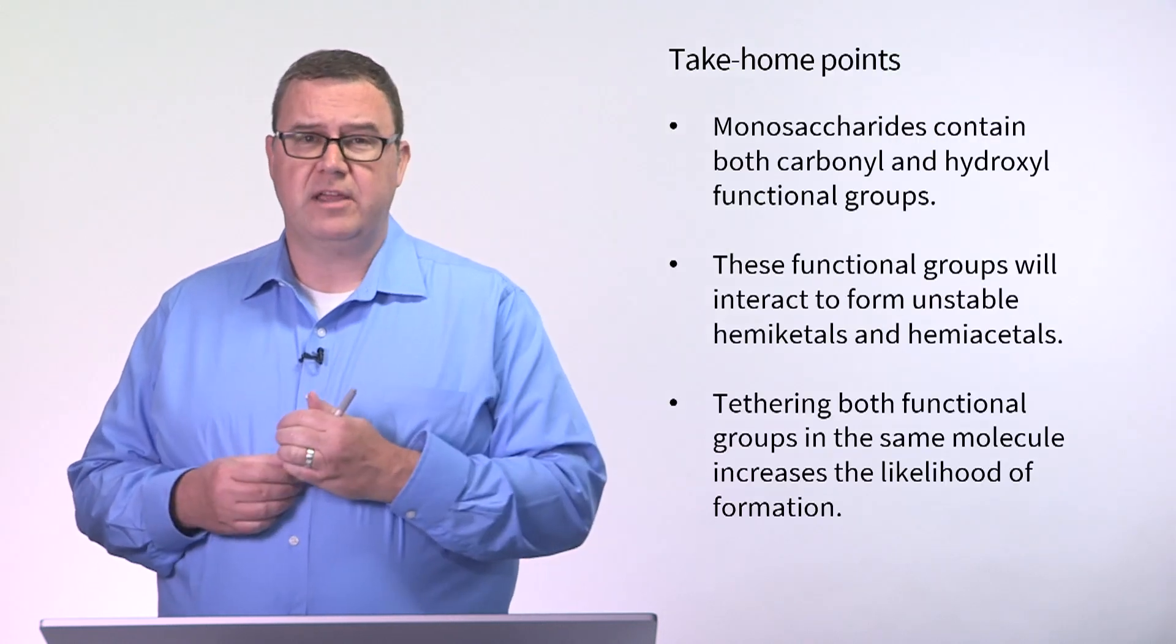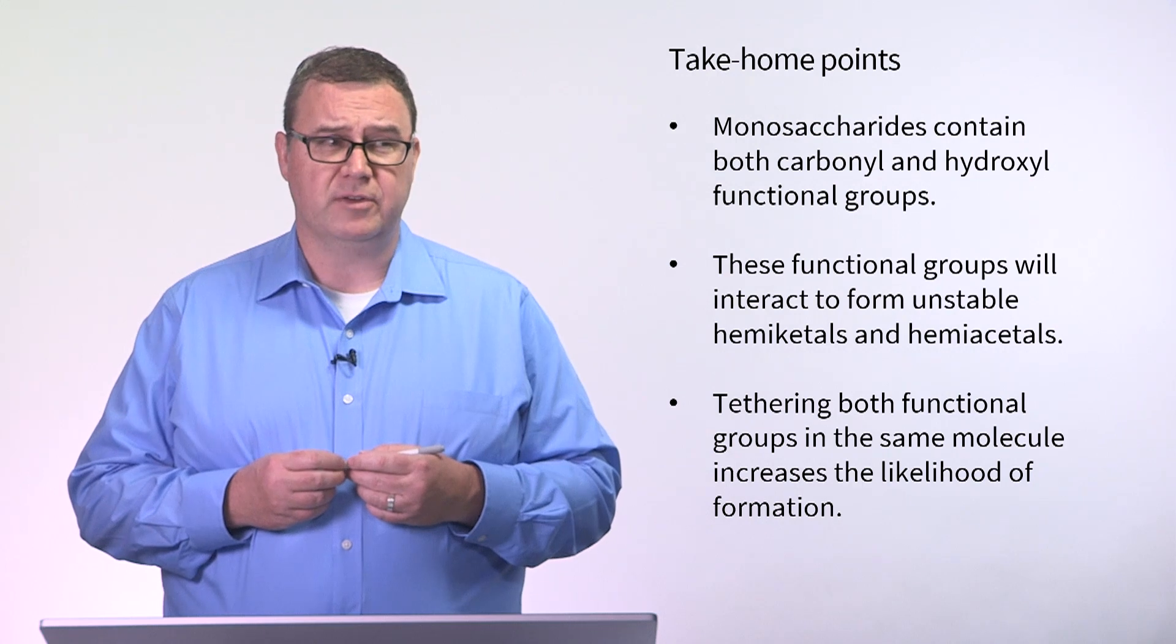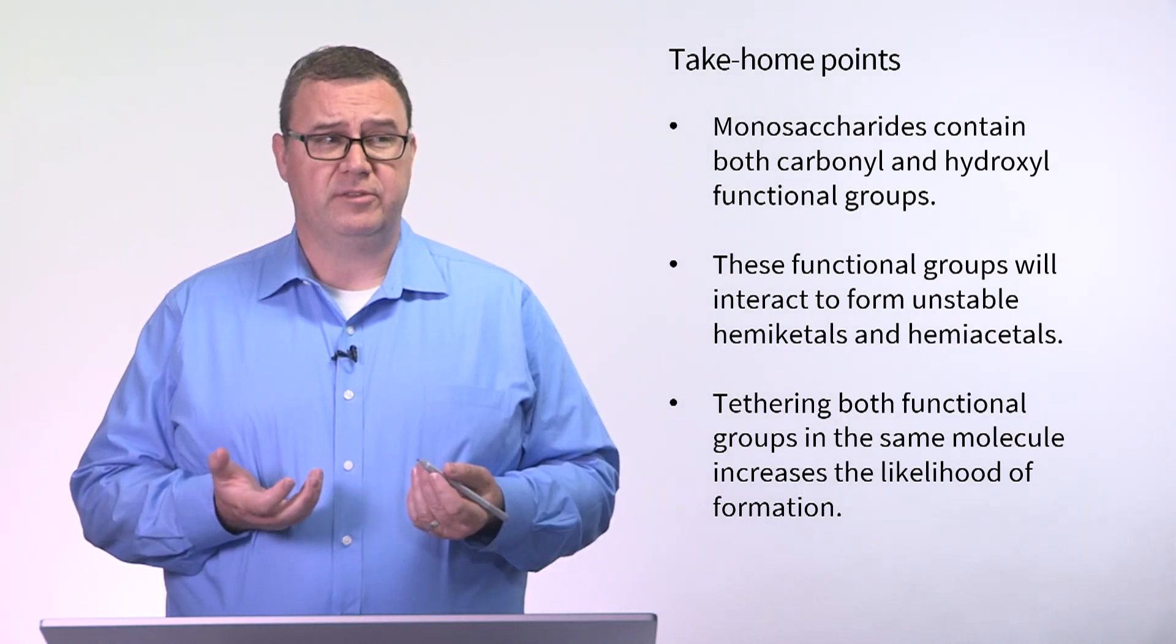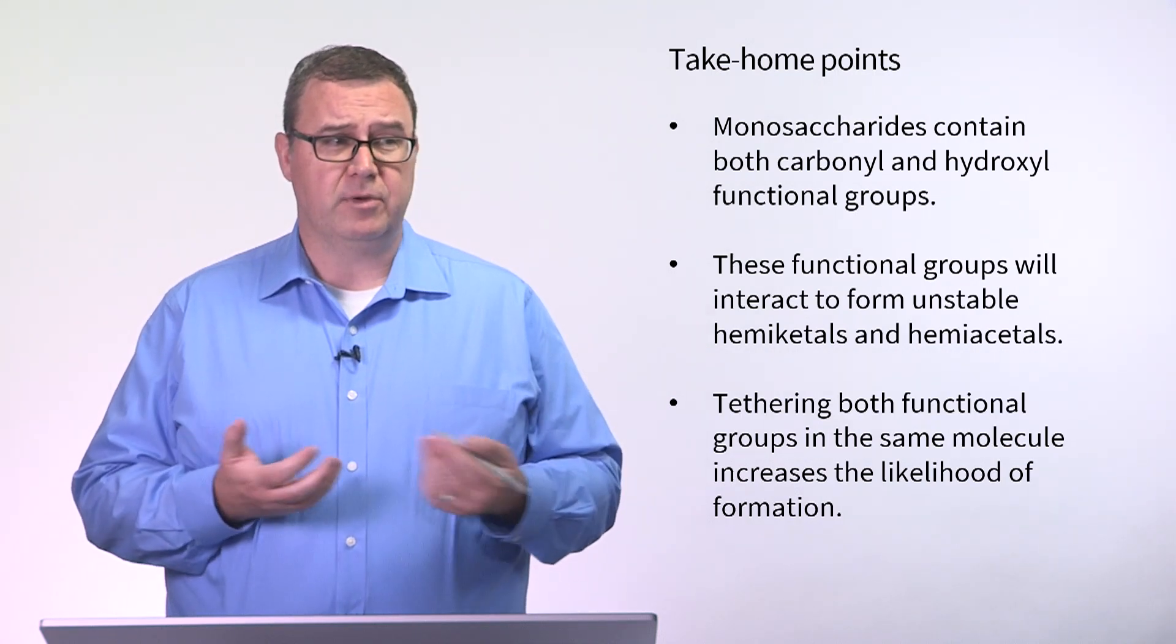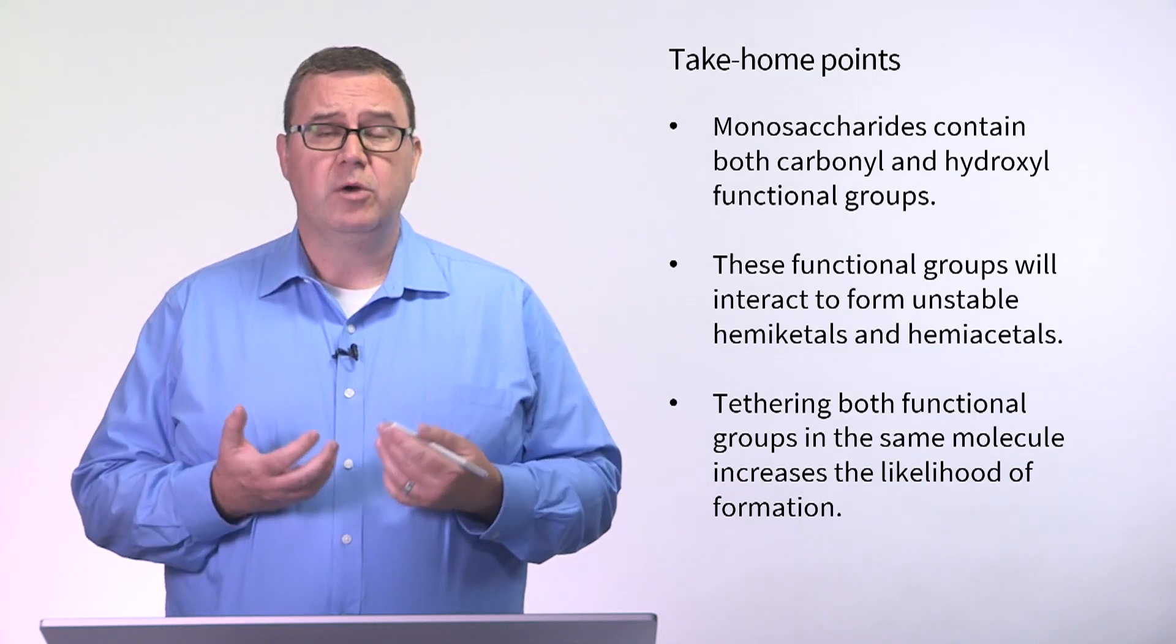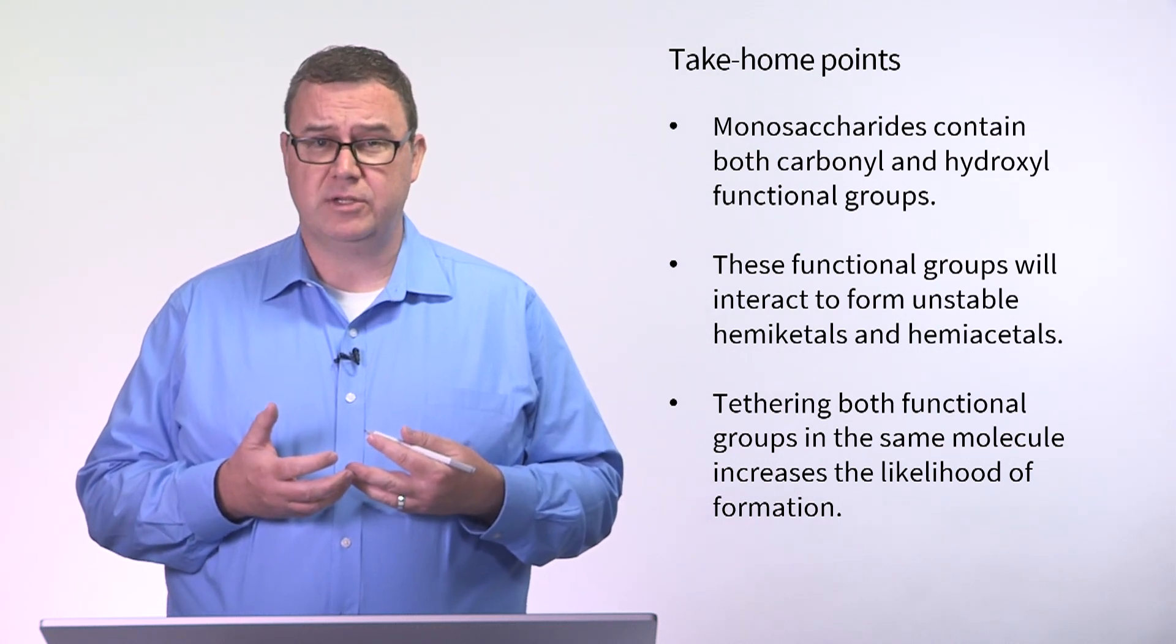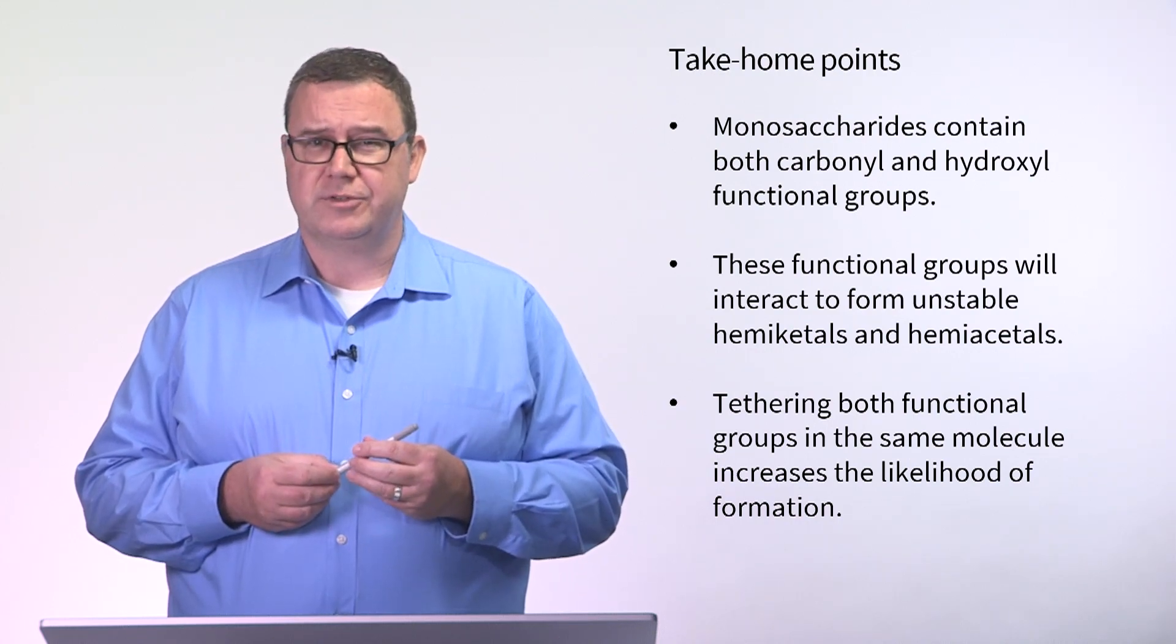So, our take home points here: monosaccharides contain both carbonyl and hydroxyl functional groups. These functional groups will interact with one another to form unstable hemiacetals and hemiketals. But by tethering both of these groups together in the same molecule, we greatly increase the likelihood of that hemiacetal and hemiketal formation, which is why we frequently see these carbohydrates drawn in Haworth projections.